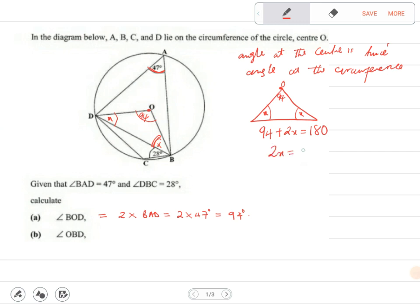We are saying 2x equals 180 minus 94, and this will be 2x equals 86. Then divide by 2, so x equals 43 degrees. Therefore, angle OBD is equal to 43 degrees.